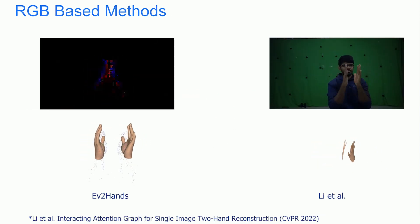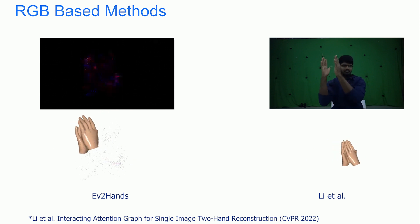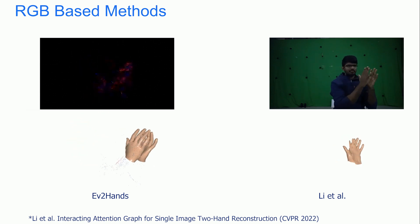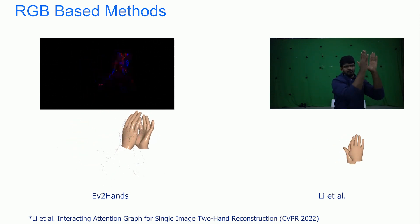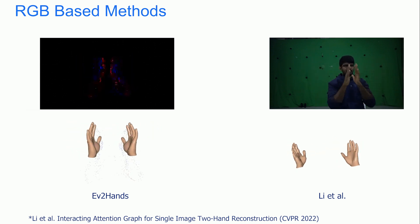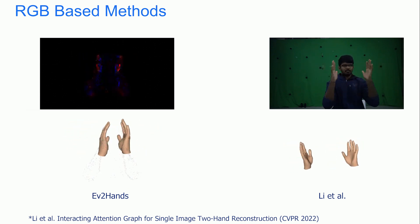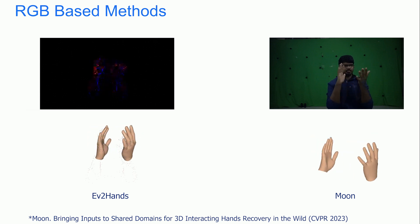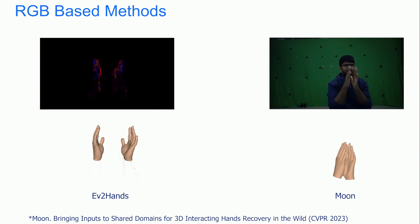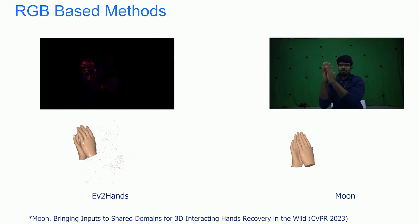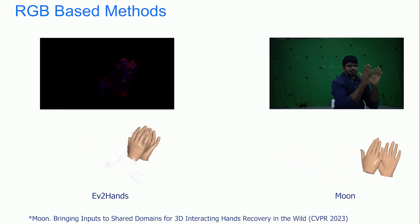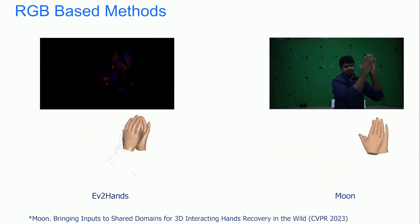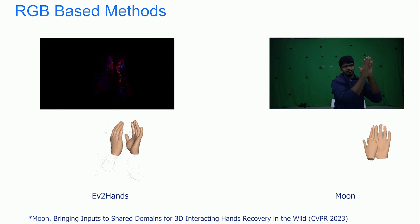We compare our method against InterHand by Lee et al., a monocular RGB-based method for 3D reconstruction of two interacting hands. This method takes as input a cropped RGB image of the hands, which is obtained in our setup by an additional RGB camera. Compared to Moon, our method predicts interhand distances more robustly when the hands are very close to each other.